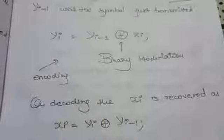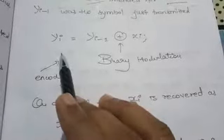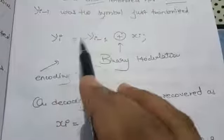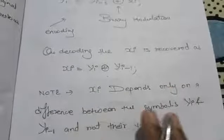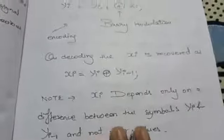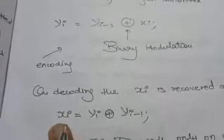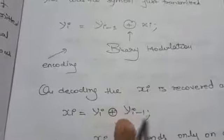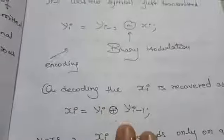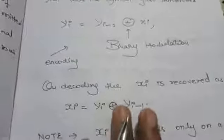When we decode, yi is our encoded form — the symbol we have transmitted, the signal in binary modulation. The fact is that xi depends only on the difference between the symbols yi and yi-1, and not their values. The value of xi depends on this difference; here we have binary subtraction for decoding and binary addition for encoding.